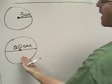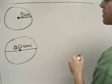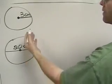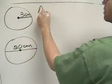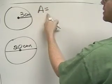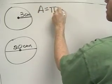Here I'm going to show you how to find the area of these two circles. To find the area of these two circles, you need to know that the formula is area is equal to pi r squared.